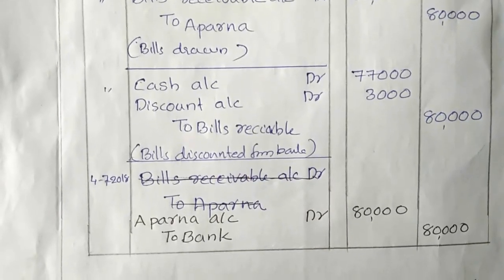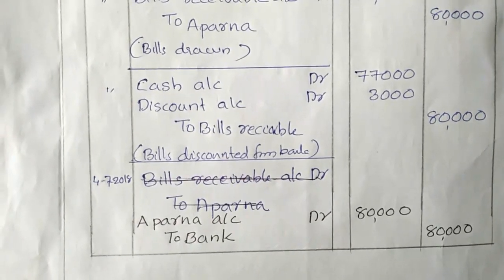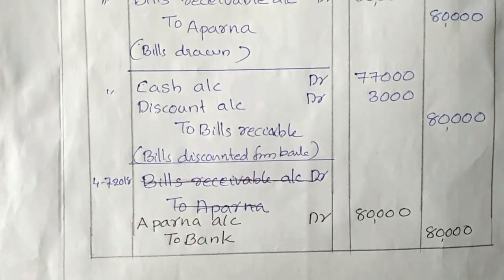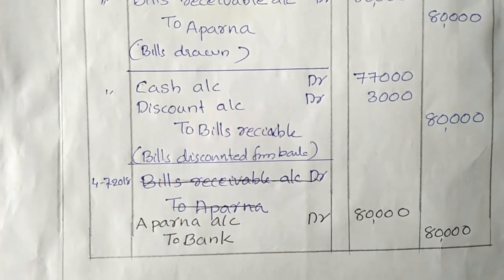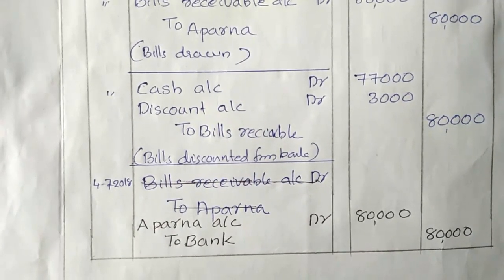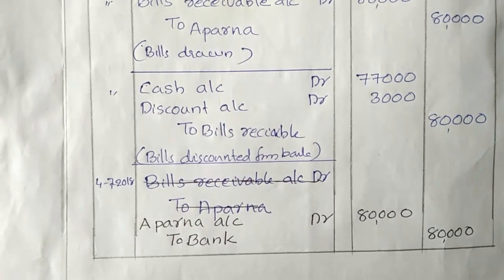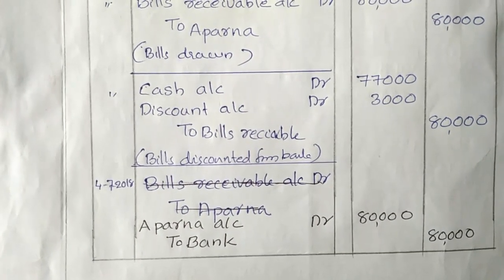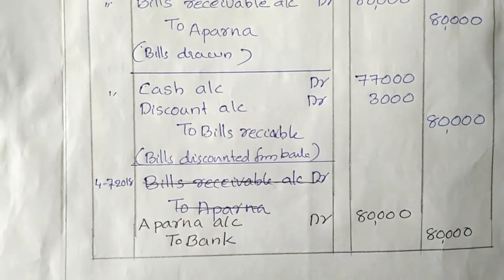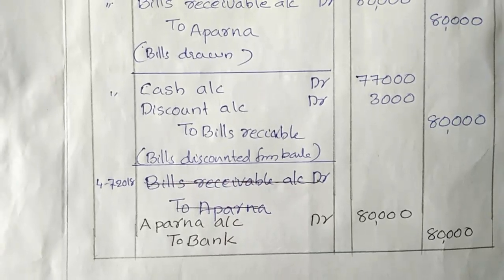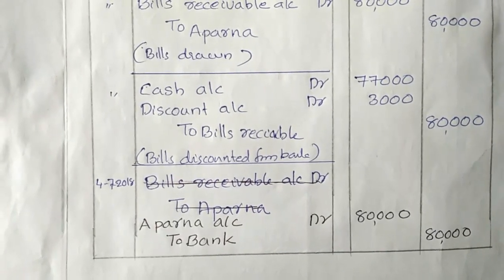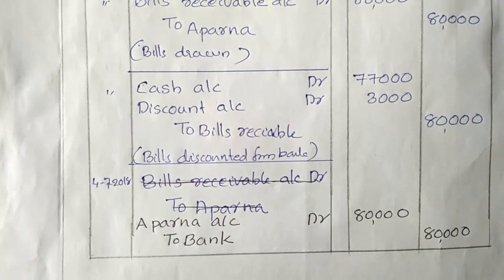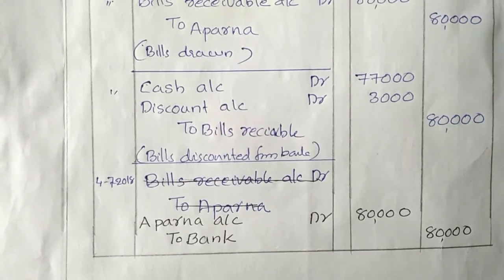At maturity, since Aparna was unable to make payment, the bill is dishonoured. The entry records the amount due, reversing the discounting entry and recognising the liability. The bank recovers the amount, and Aparna's account is debited for the full bill amount.